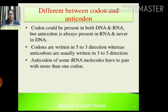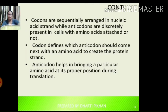The difference between a codon and anti-codon: a codon can be present in both DNA and RNA, but the anti-codon is only present in RNA, not in DNA. Codons are written in the 5' to 3' direction, whereas anti-codons are written in the 3' to 5' direction. Anti-codons of some tRNA molecules can pair with more than one codon. Codons are sequentially arranged in a nucleic acid strand, while anti-codons are discretely present in cells with or without an attached amino acid. Codons define which anti-codon should come next to create the protein strand, while anti-codons help bring a particular amino acid to its proper position during translation.